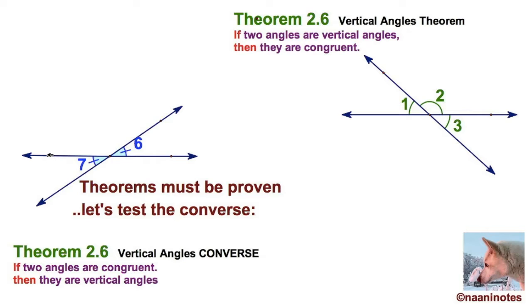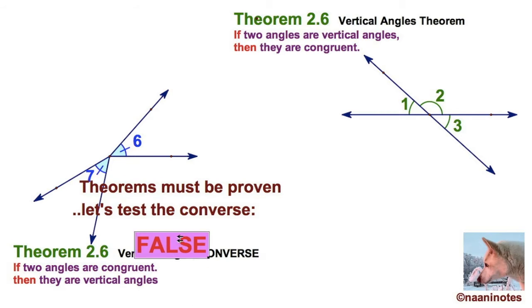Six and seven are congruent. But as I've already indicated here, they don't really have to be vertical, do they? So this statement is just plain false. They don't even have to share a vertex, for that matter. This doesn't work.